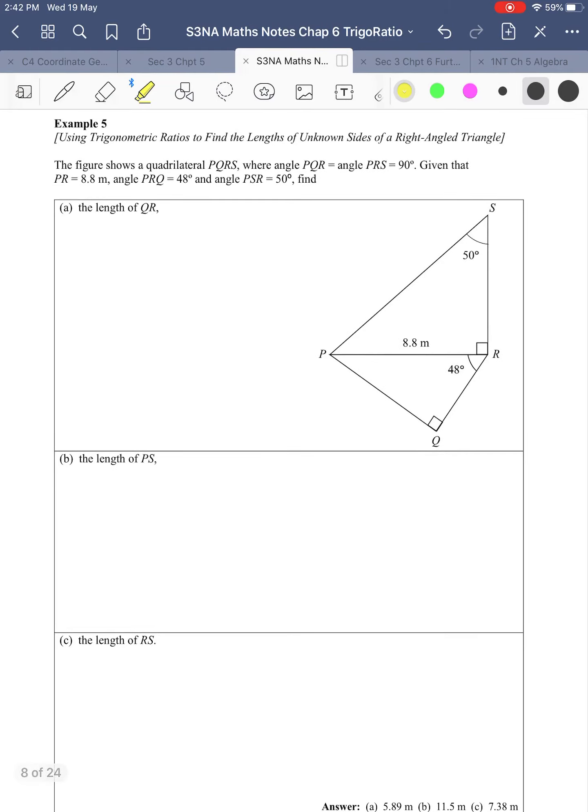Angle PRS is 90 degrees. Given that PR is 8.8, PRQ is 48 degrees, and PSR is 50 degrees, find the length of QR. So QR is what I want to find. First thing I do is label my right-angled triangle: hypotenuse, opposite, adjacent.